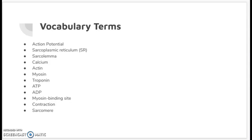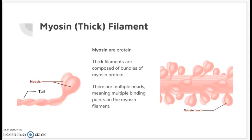Here are some vocabulary terms that we went over last time — go ahead and look over them, as they will come up again during this lesson. The myosin filament, or thick filament, is composed of proteins. As mentioned before, the actin filaments are also composed of various proteins with different functions, and the myosin are likewise composed of protein.